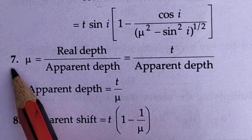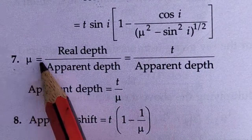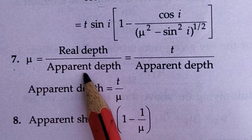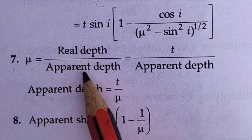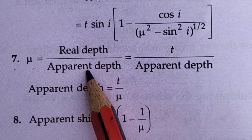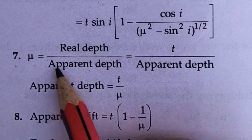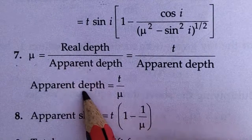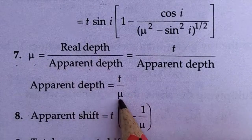Formula number seven: refractive index mu equals real depth divided by apparent depth. Or we can say apparent depth equals real depth divided by mu.